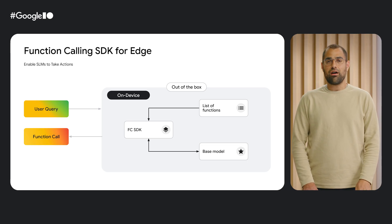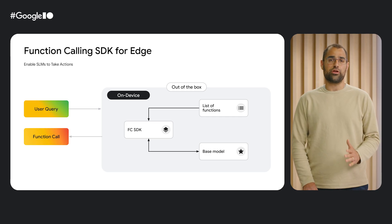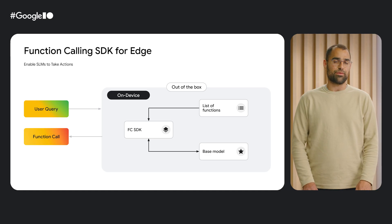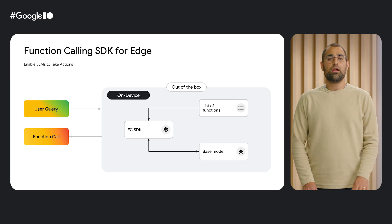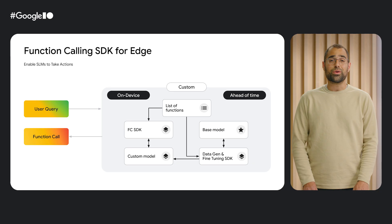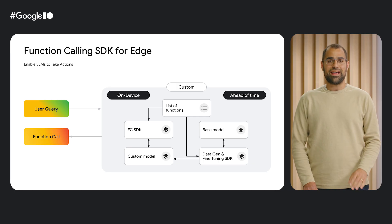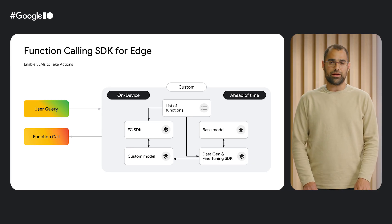Second, we have function calling, also commonly called tool use. Oftentimes when building features, you don't simply want the language model to return text, but you want it to take an actual action — generally executing an API that then programmatically does something else. We are excited for the launch of our Google AI Edge function calling SDK. This SDK lets you register your functions from your application to be used with your language model. You can use it out of the box, simply registering your functions on device with the SDK and using a base model. Or if you need better accuracy or more robust scenarios, you can customize your model: in Python, register your application functions and provide a base model, and our SDK will use synthetic data generation and then fine-tune your base model for your specific functions. Take this new customized model and run it on device with our SDK to greatly expand the capabilities of function calling on the edge. This is a newly released SDK and, like our RAG SDK, is available on Android with iOS and web versions coming later.